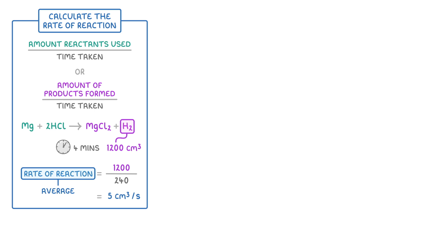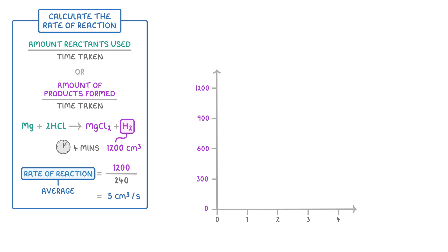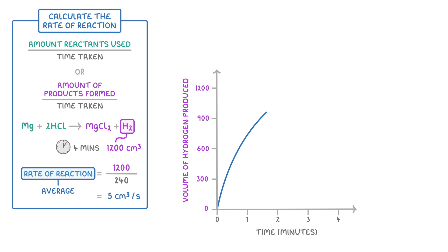If we had a way to monitor how much gas was being released during the reaction, then we could plot it on a graph, and see how the rate of reaction changes during the reaction. On the x-axis we'd have time, and on the y-axis we'd have the volume of hydrogen produced. At first, because there'll be loads of magnesium and acid that can react together, loads of hydrogen will be produced, so we get a very steep curve which indicates a high rate of reaction. As the magnesium starts to get used up, the hydrogen will be produced more slowly, until finally the graph plateaus once all of the magnesium has been used up.